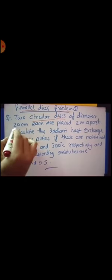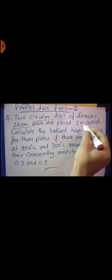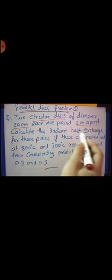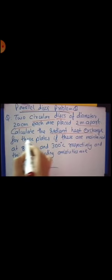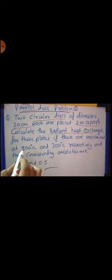It is given that parallel disk or the two circular disk of diameter 20 centimeter and they are placed 2 meter apart. Heat exchange to be calculated. The temperatures are given as 800 and 300 degree centigrade and their emissivities are given as 0.3 and 0.5.